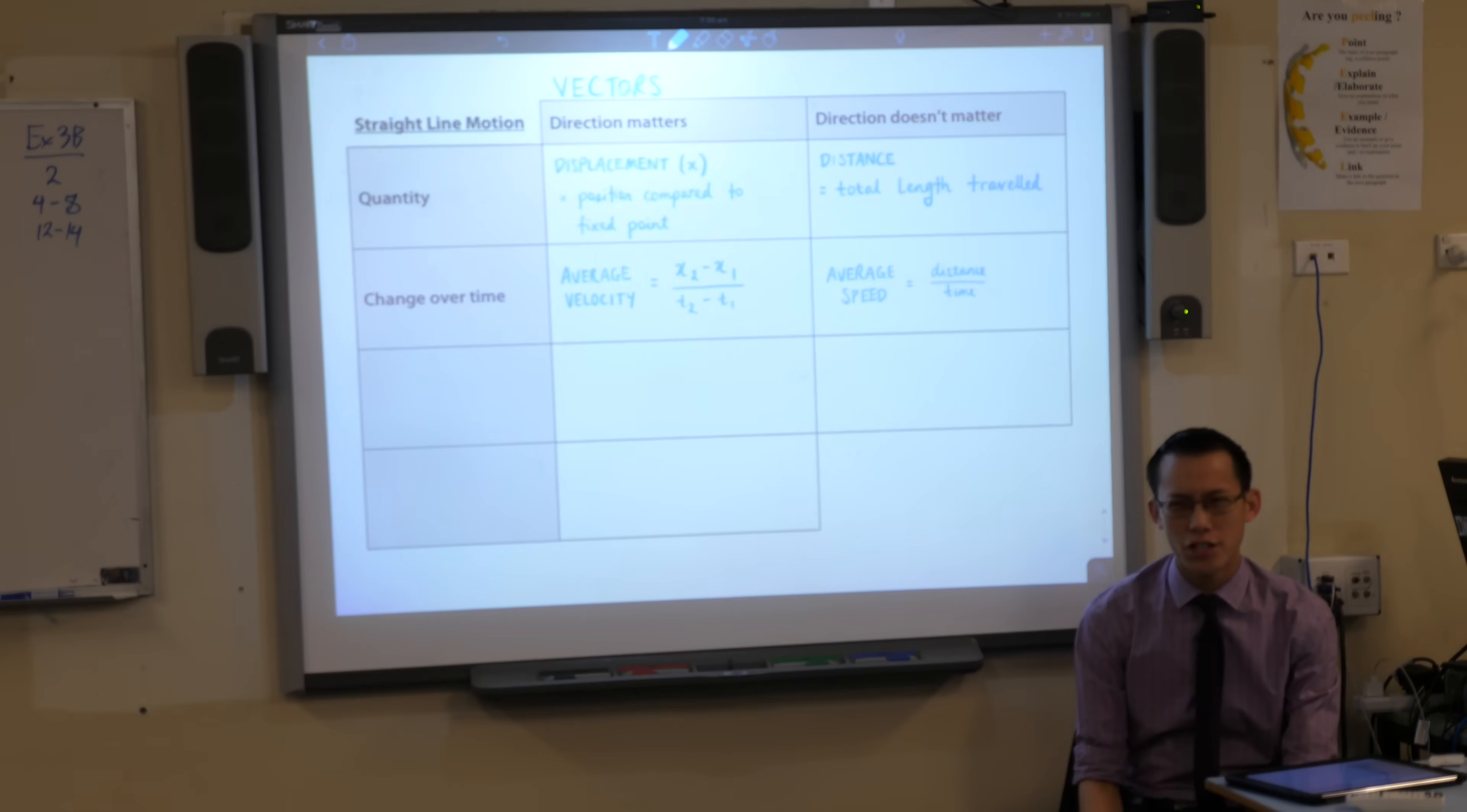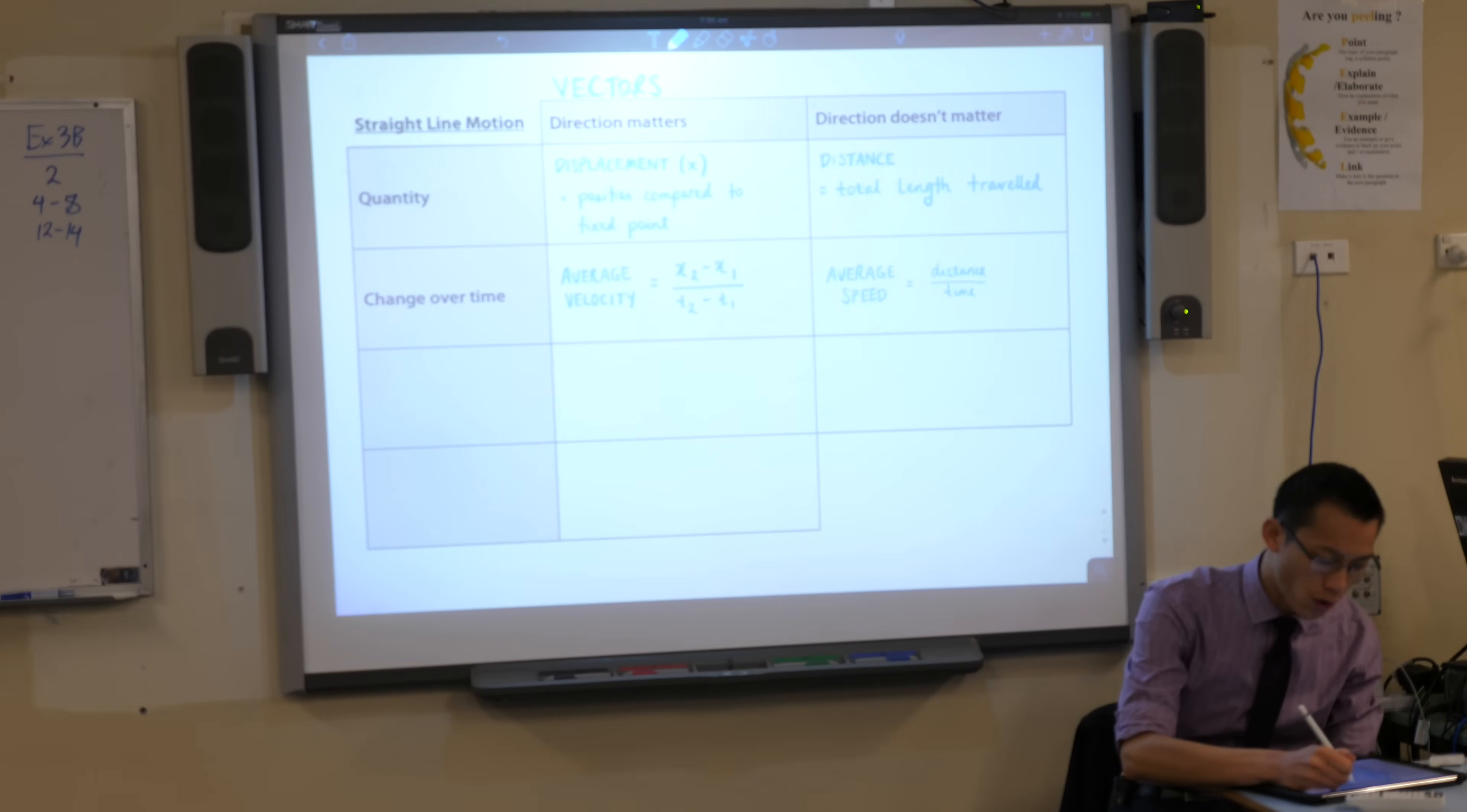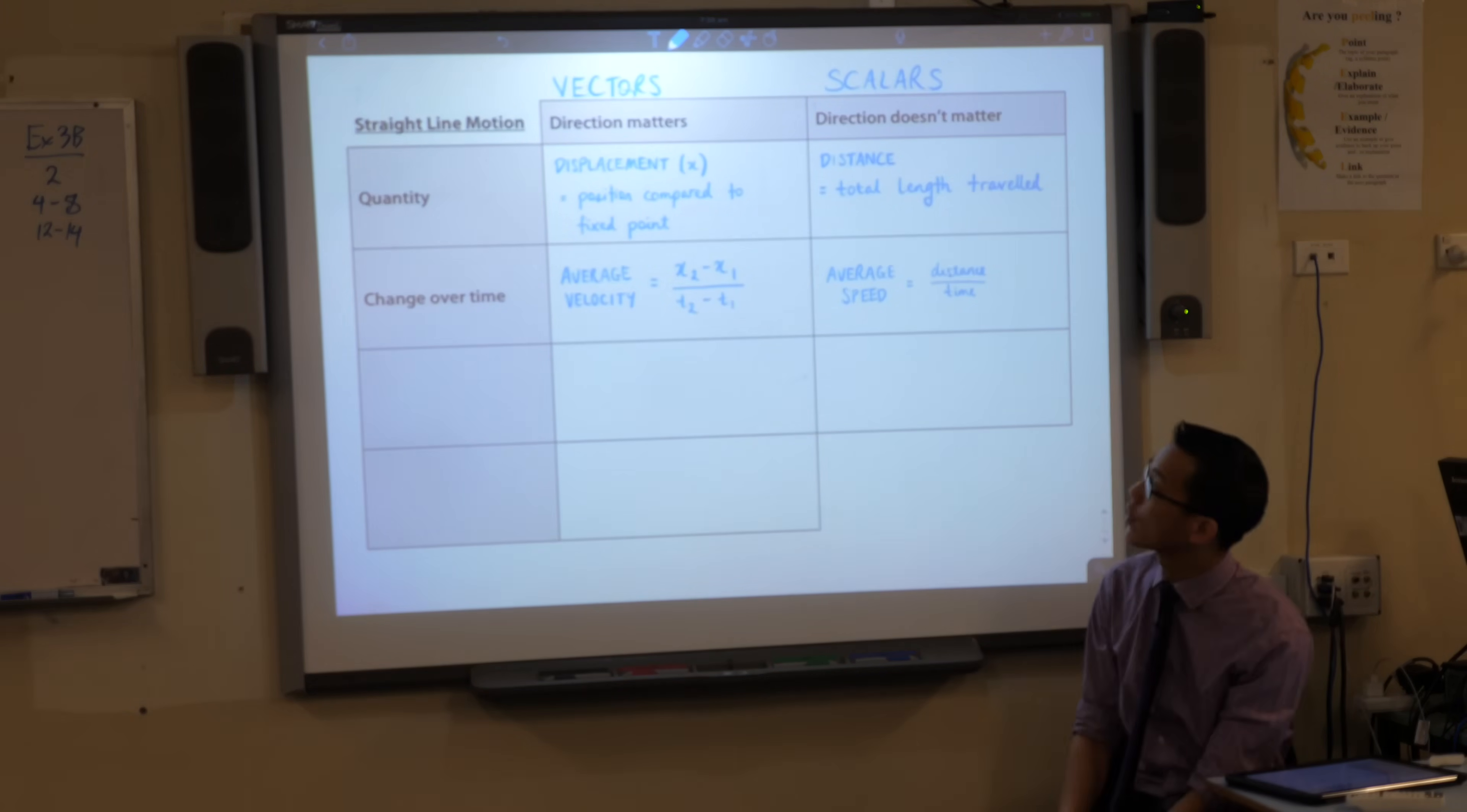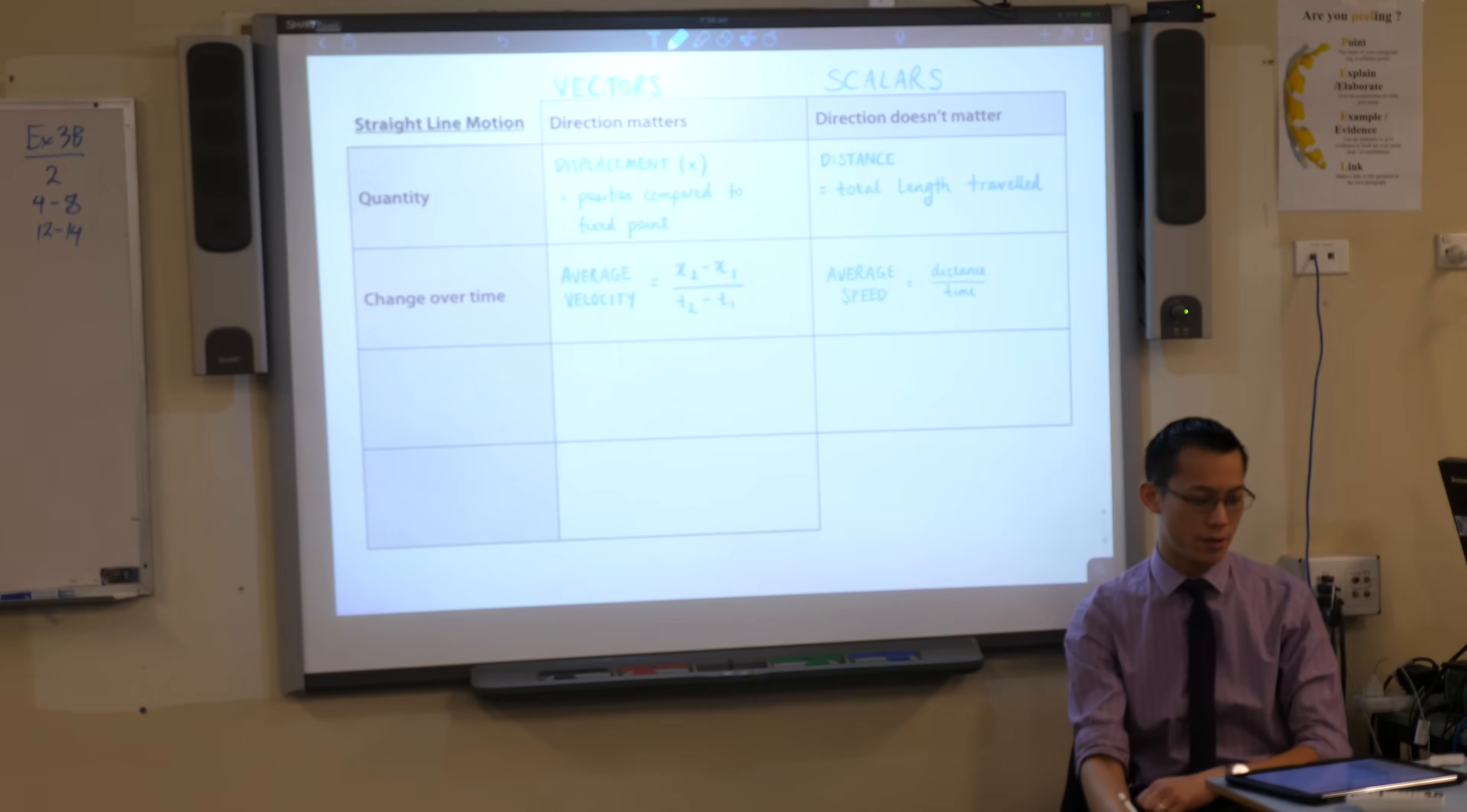When you don't worry about the direction, when all you're caring about is the magnitude, the size, we call that a scalar. So everything you can see on the left-hand column are vectors, whereas everything on the right-hand column are scalars.